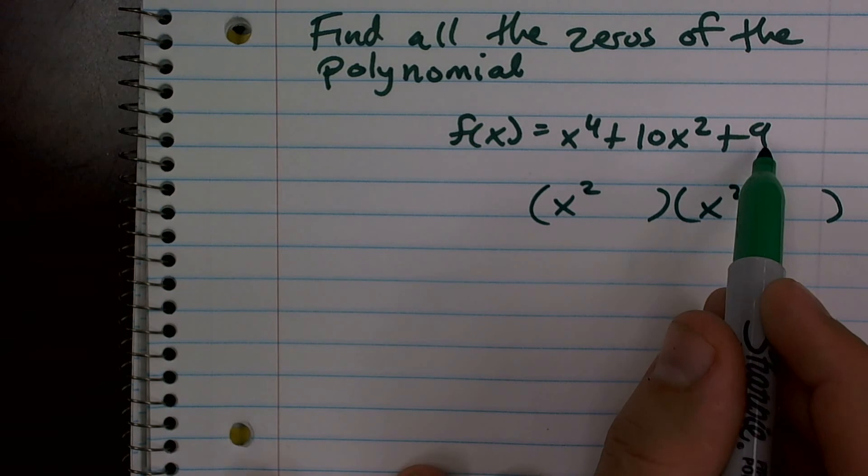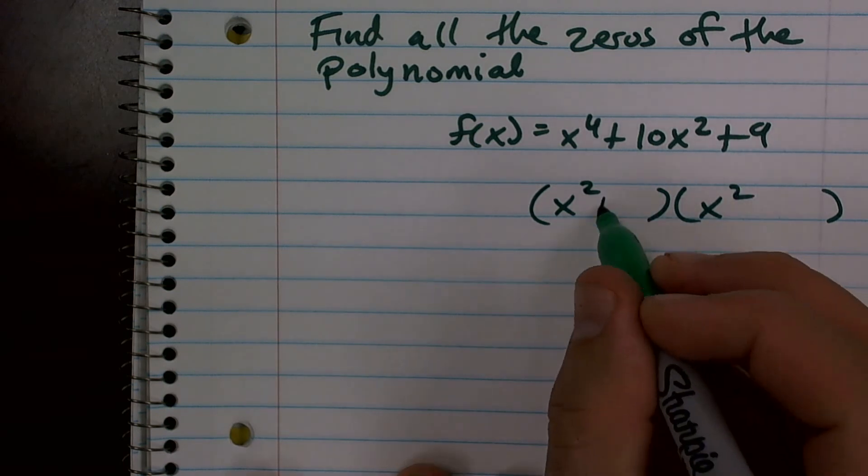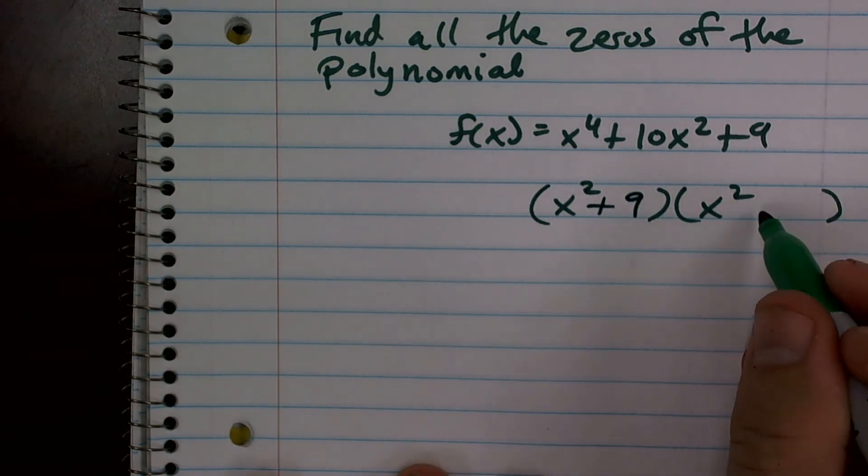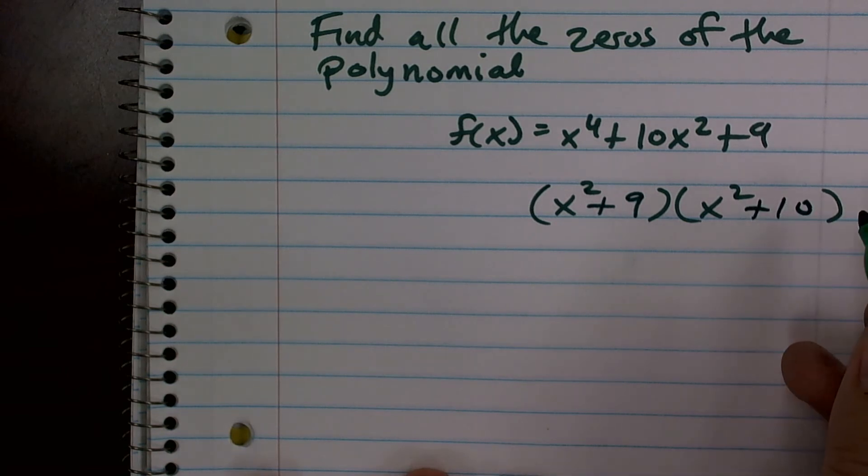So then I look, what two numbers multiply to give you nine, but then add to give me ten? And quickly we can see that this becomes x squared plus nine, and then x plus ten does not work. How about x squared plus one?